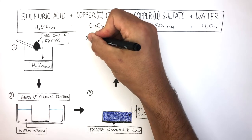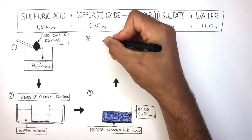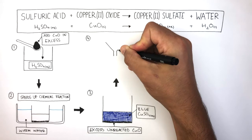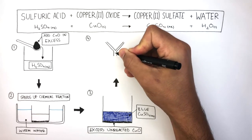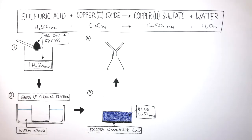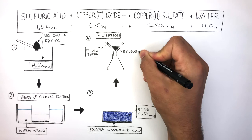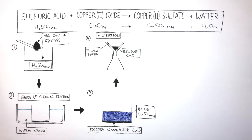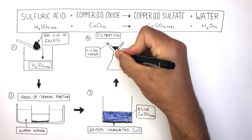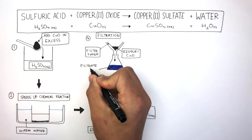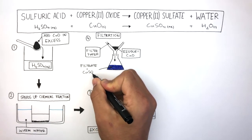In the next stage, we now separate the copper oxide from the copper sulfate solution using filtration. The equipment needed includes a filter funnel and filter paper, both slotted into a conical flask. The black substance in the filter paper represents the residue — in this case the copper oxide — as it is insoluble and too large to pass through the filter paper. What does pass through is the copper sulfate solution, which is the filtrate, collected in the conical flask.